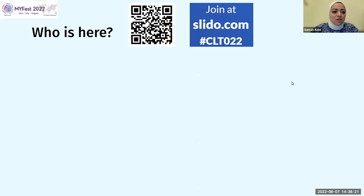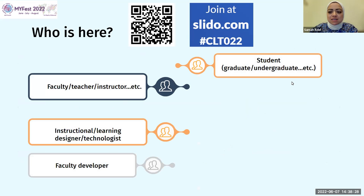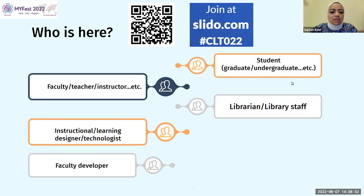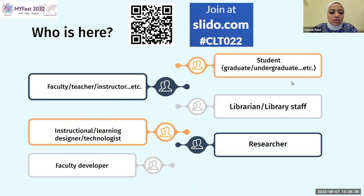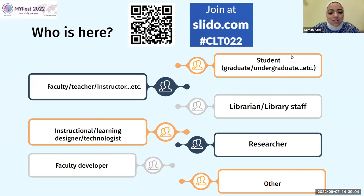Let's start with a roll call — we're curious to know more about you. We've listed categories on screen: teacher or faculty member, technologist or instructional designer, faculty developer, student (graduate or undergraduate), librarian, researcher, or other. Go to Slido now — you can scan the QR code or go to slido.com and enter the code CLT022 — so we can know who is in the room.